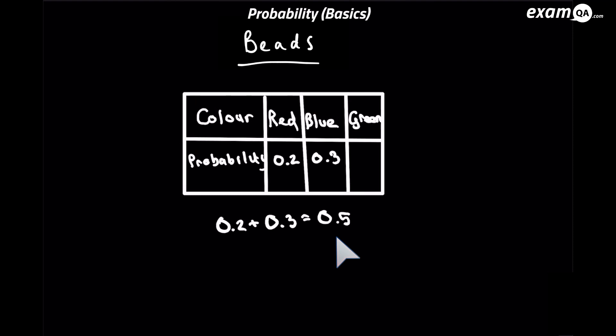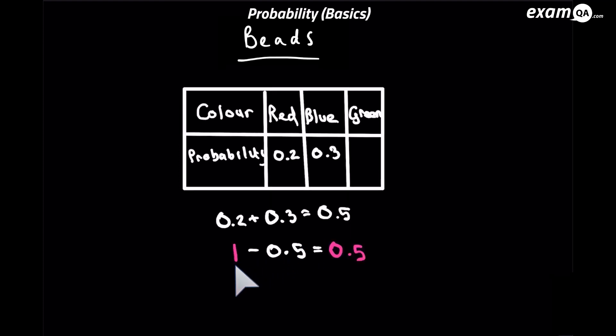And we'll go on to do 1 minus this answer, which will give us the remaining number, which must be the probability of green. So the probability of green is 0.5.